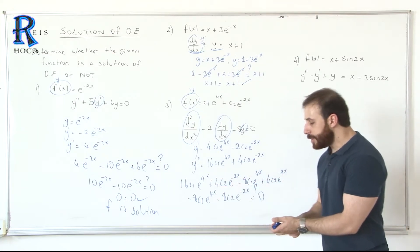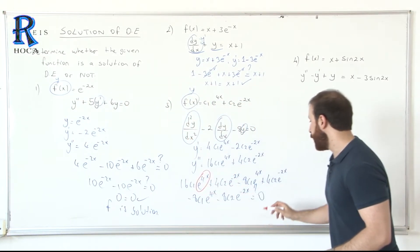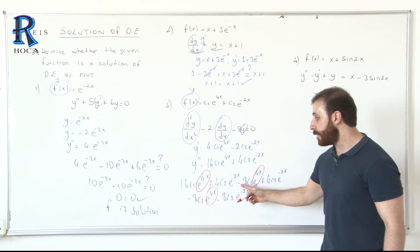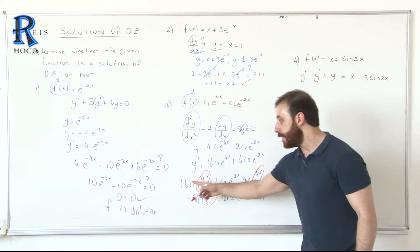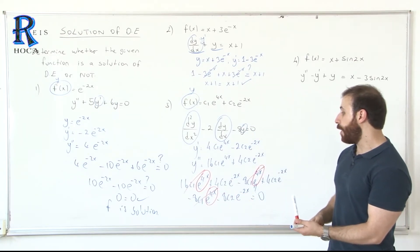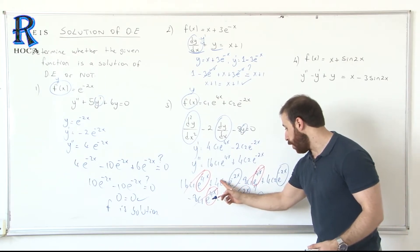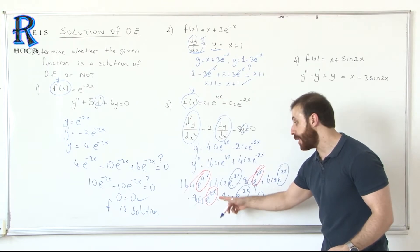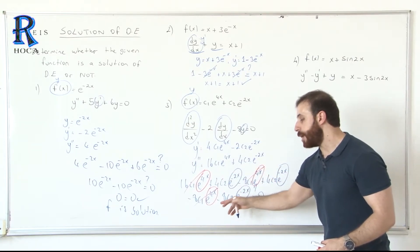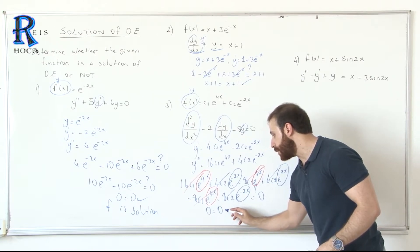For the e^(4x) terms, the coefficients are 16 minus 8 minus 8, which equals 0. For the e^(-2x) terms, the coefficients are 4 plus 4 minus 8, which equals 0 — all multiplied by C2, so 8C2 minus 8C2 equals 0. The left side equals 0, which equals the right side, so this is a solution.